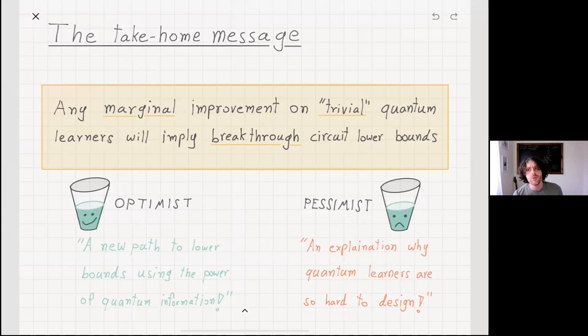If you are a glass half full kind of person, then you can say perhaps this is a new and exciting path to show strong lower bounds using the power and expressivity of quantum computing. All we have to do is use the power of quantum algorithms to get this tiny improvement, and that would give us these amazing lower bounds. If you're a glass half empty person, then this perhaps could explain why it's so difficult to design provably correct quantum learning algorithms.